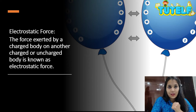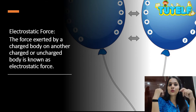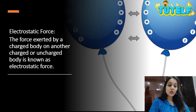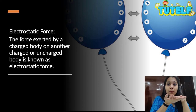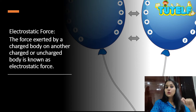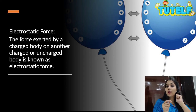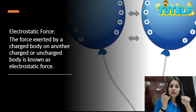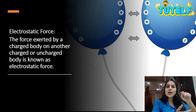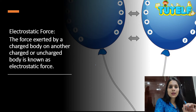Electrostatic force — I want you to do an activity. Take a scale and rub it. Before rubbing, tear a few paper pieces, put them on the surface, rub the scale and hold it above those pieces. You will see the paper pieces start to attract the scale. This attraction is because of electrostatic force. You do not need to touch the scale to the paper. When you rub it, it gets charged, and when you bring it close, because of induction this paper also gets charged and is attracted to the scale. The attraction or interaction without physical contact between two charged bodies, or one charged and one uncharged body, is the electrostatic force.